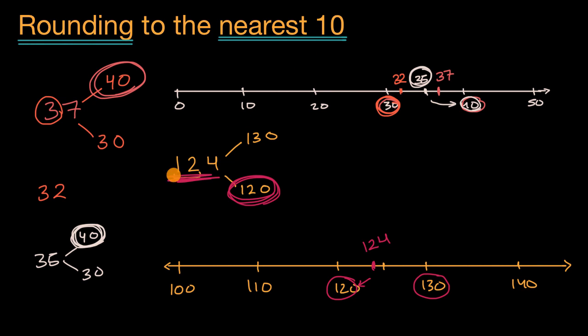If this were 125, 126, 127, 128, or 129, then we would round up to 130. And of course, if it were 130, we'd round it to 130.